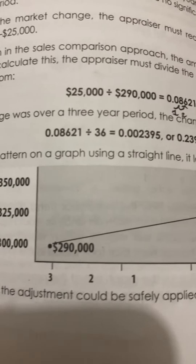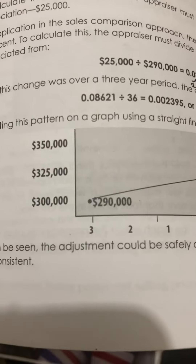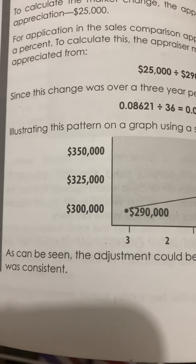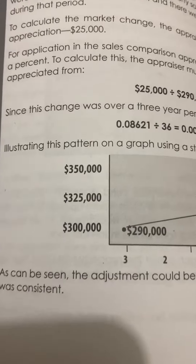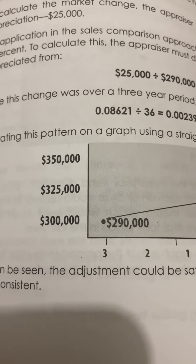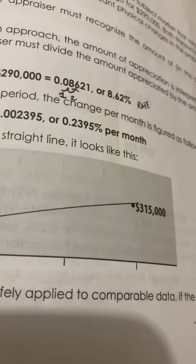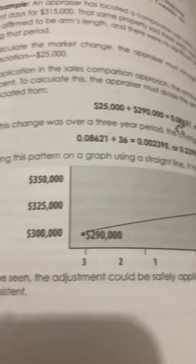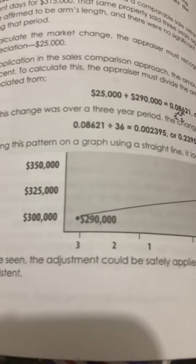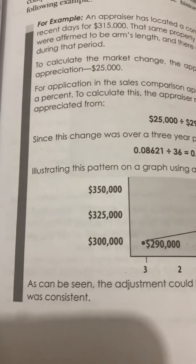Illustrating this pattern on a graph using a straight line, it shows prices on the left going from $300,000 up to $350,000. The subject started at $290,000 and goes up to $315,000. As can be seen, the adjustment could be safely applied to comparable data if the appreciation was consistent.